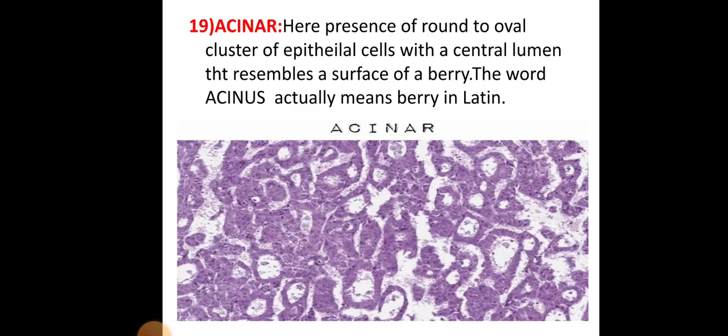The acinar pattern features round to oval clusters of epithelial cells with a central lumen that resembles the surface of a berry. The word acinus actually means berry in Latin.